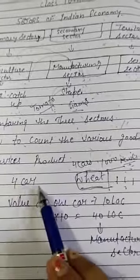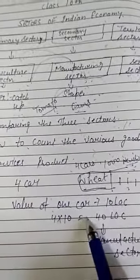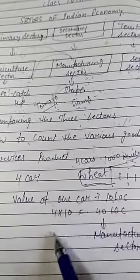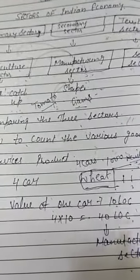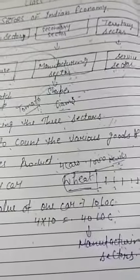For example, it is four cars. The value of one car is 10 lakh, and four cars will be 40 lakh. This is the manufacturing sector. The value of the car is 40 lakh.